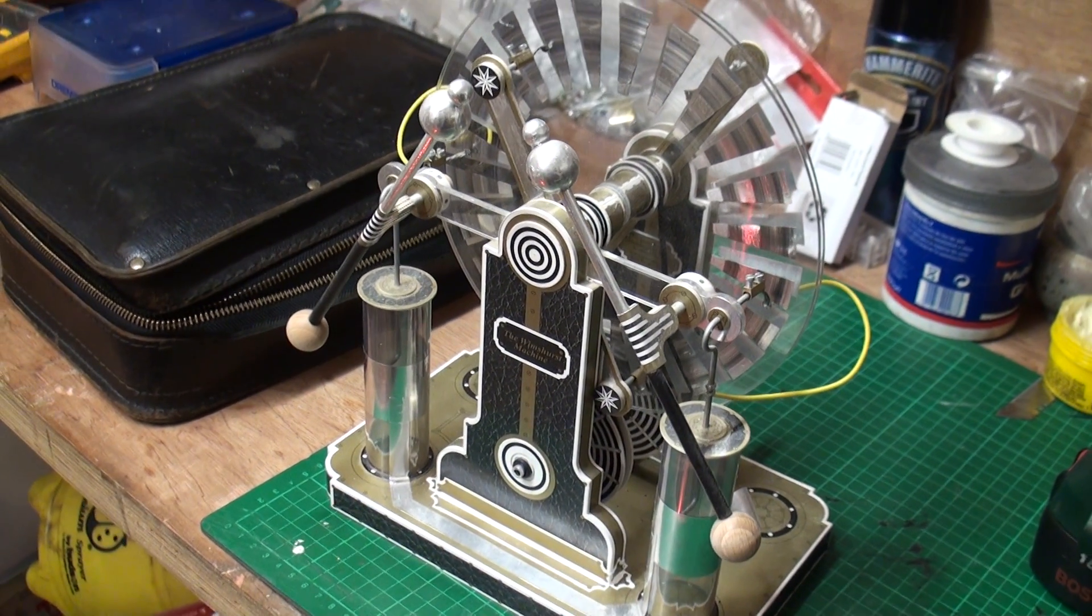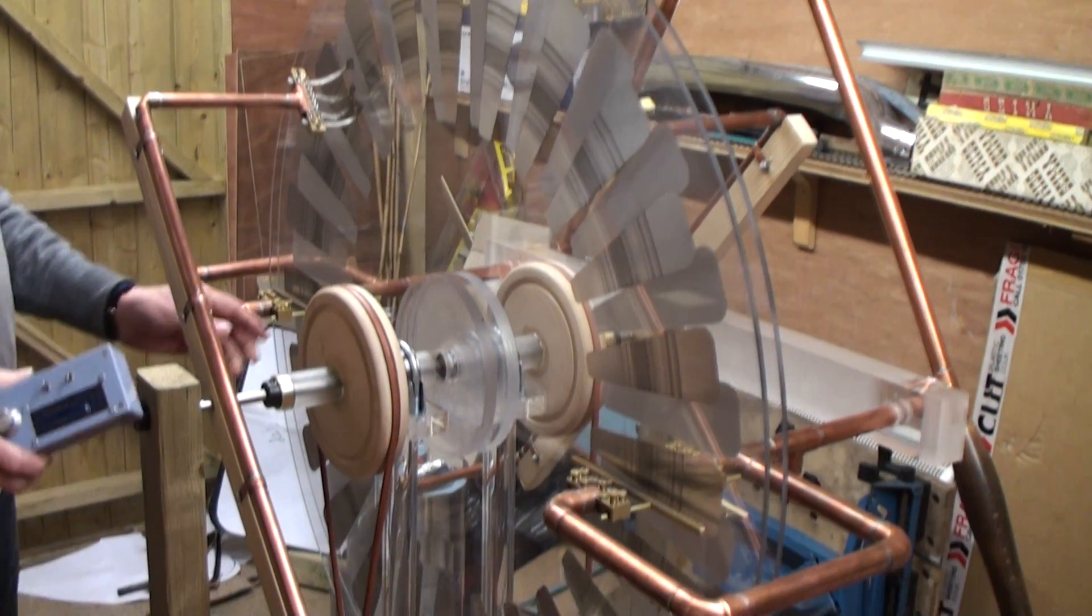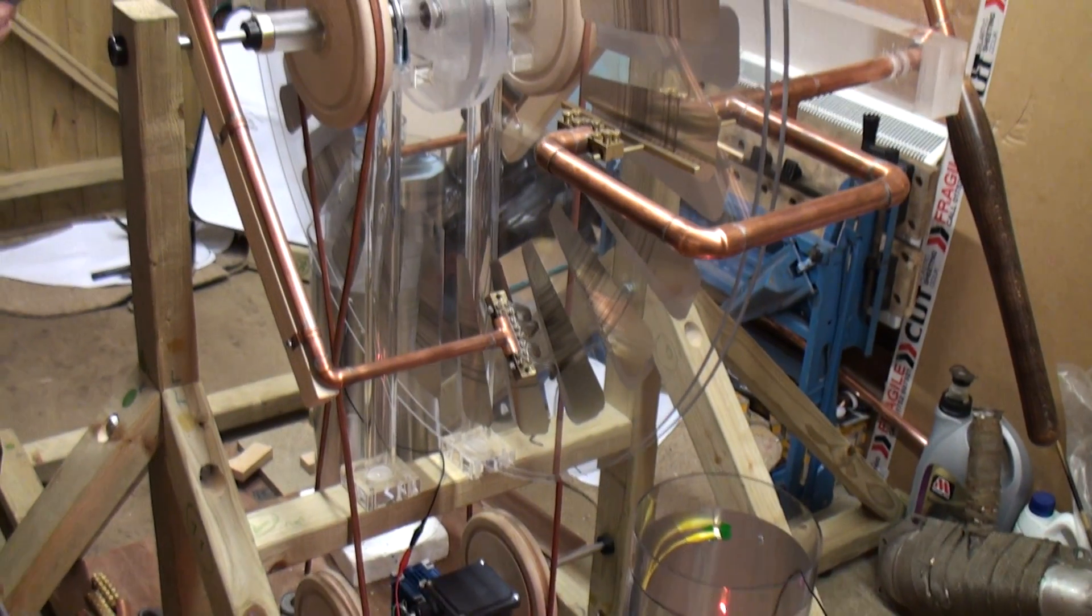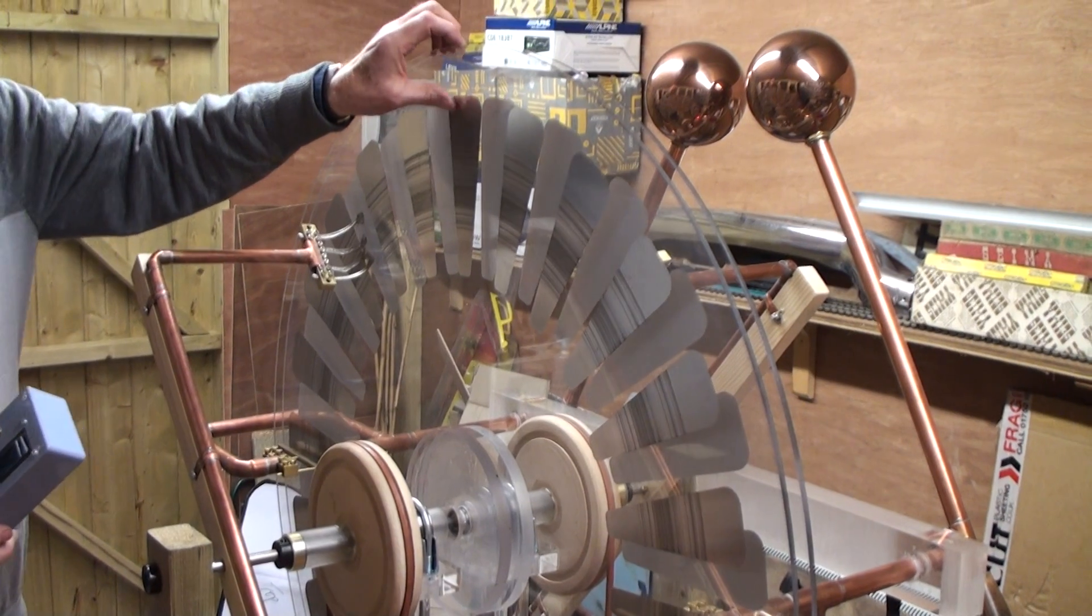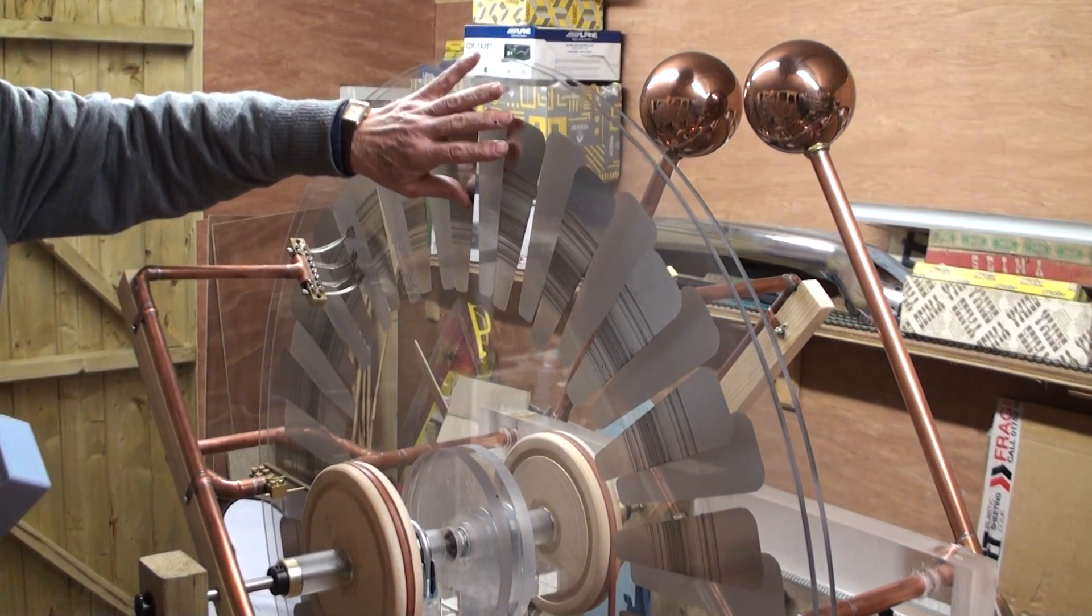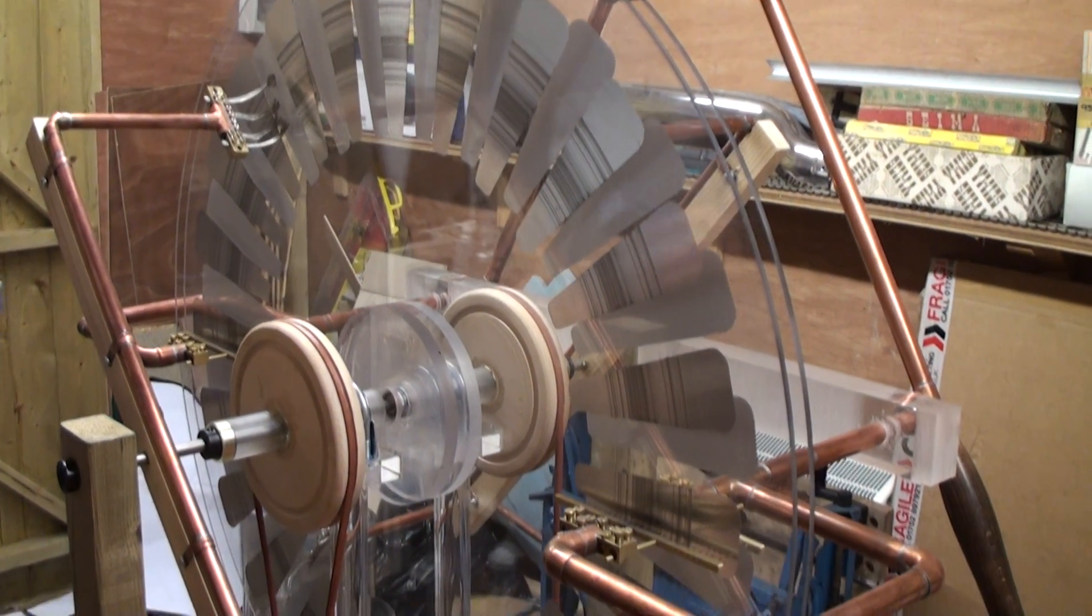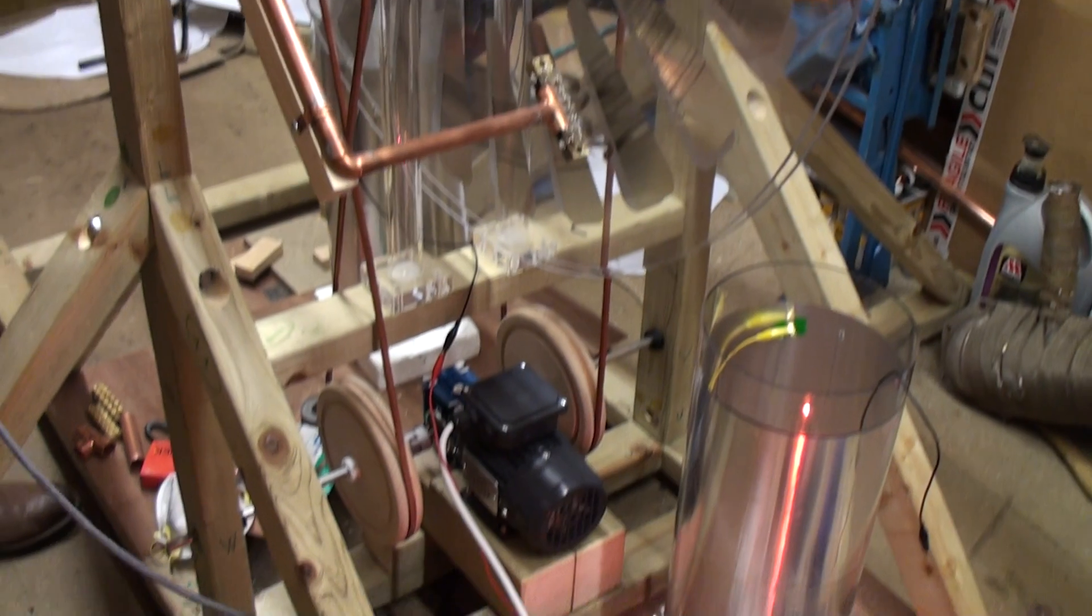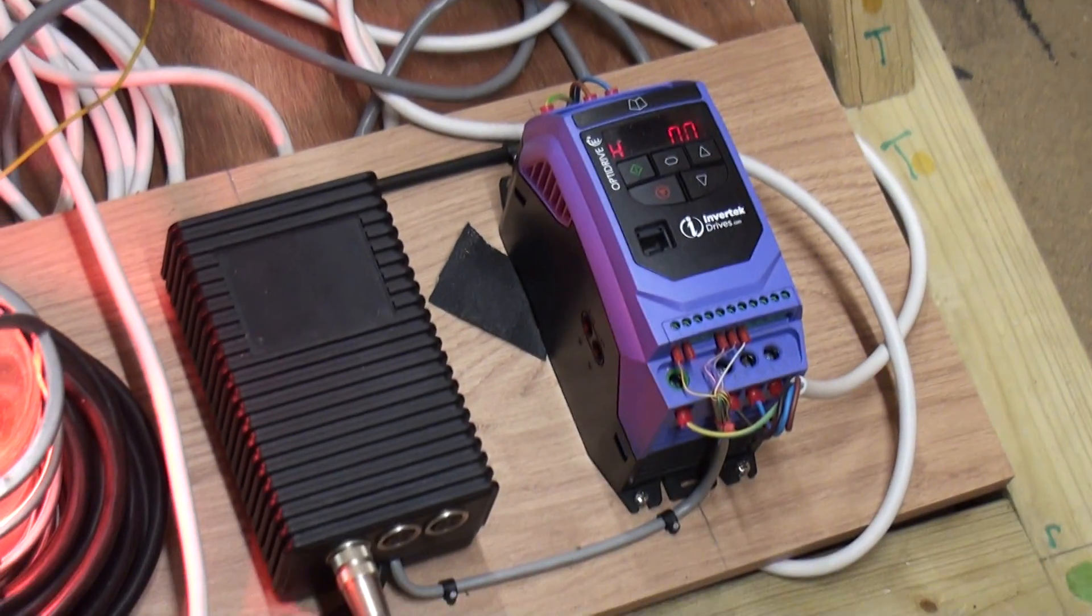We wanted to go one better though, so we built this machine using 1m diameter discs. It's exactly the same as the small one. It's got two discs which rotate in opposite directions with these metallic sectors here which collect the charge off the disc. A fair amount of power is needed to drive this, so we drive it by means of an electric motor. That's a three-phase motor which is carefully controlled using an inverter, so we're able to control the speed very accurately.